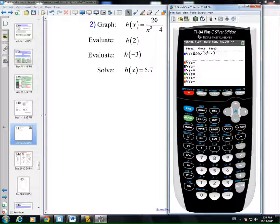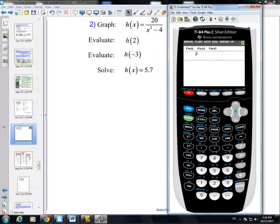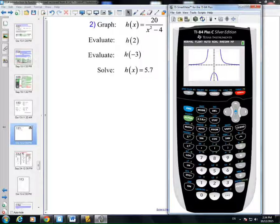The standard viewing window looks like this, where we go from negative 10 to 10 and negative 10 to 10 with counting by ones. This is the default setting on the calculator. I've entered in the equation in my calculator, and now I just want to see maybe in the standard window, do I get a good graph? And it sure seems like it.